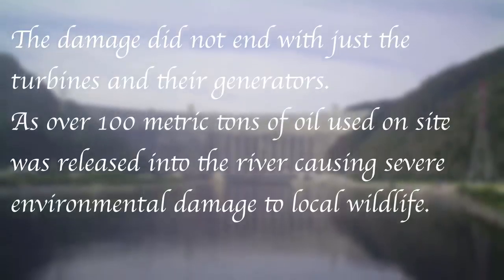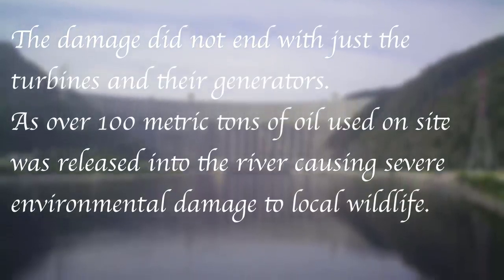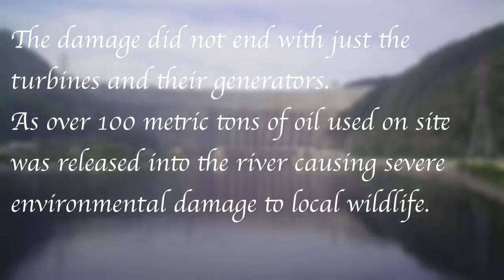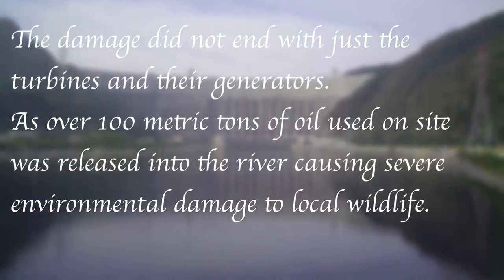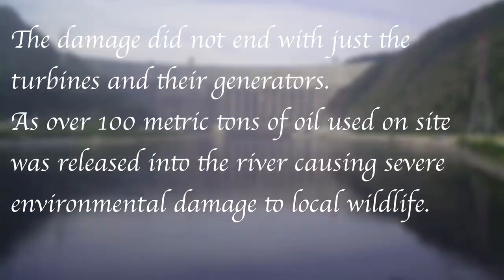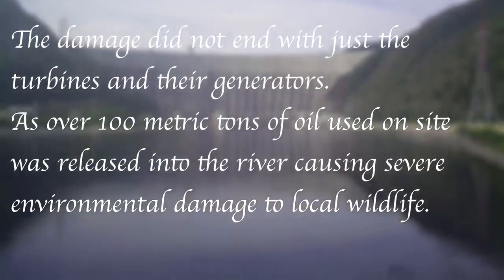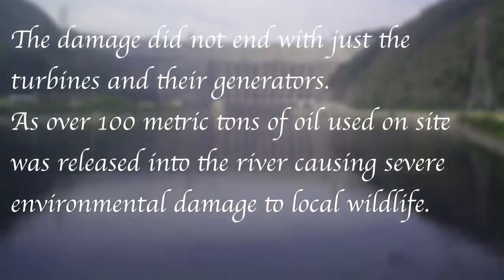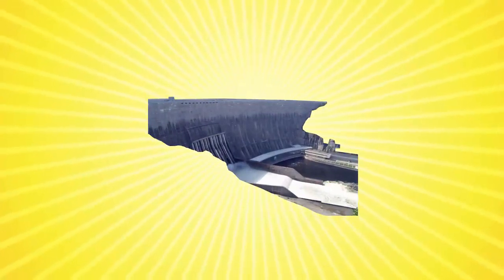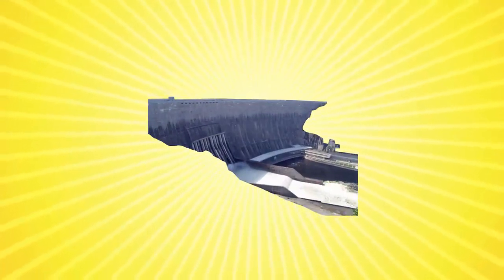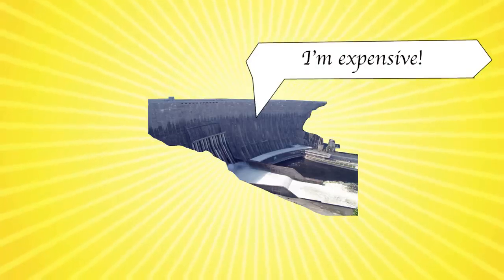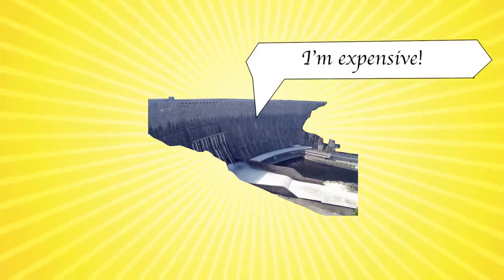The damage did not end with just the turbines and their generators, as over 100 metric tons of oil used on site was released into the river, causing severe environmental damage to local wildlife. By the 24th of August, the water inside the damaged buildings was pumped out, and on the 28th of August, the search and rescue operation was completed. The repair works wouldn't be completed until 2014, costing well over 1 billion dollars.